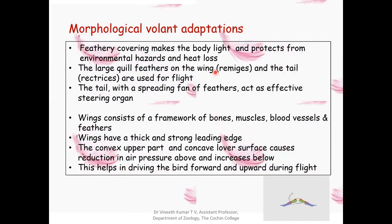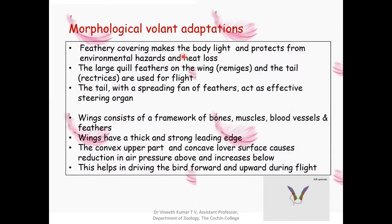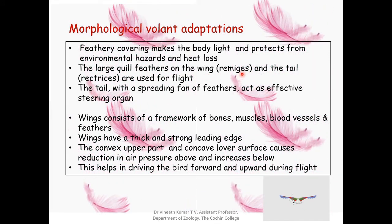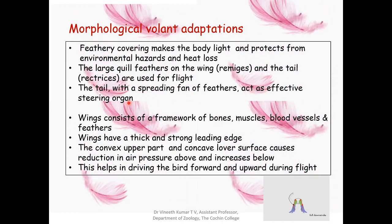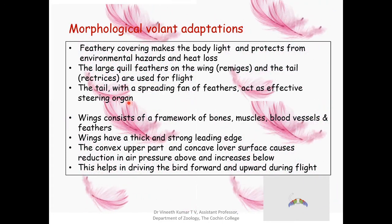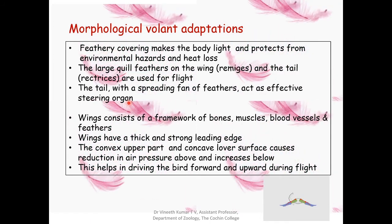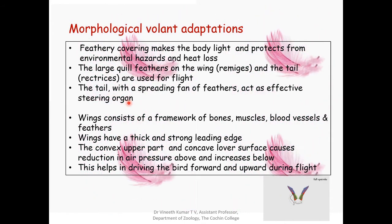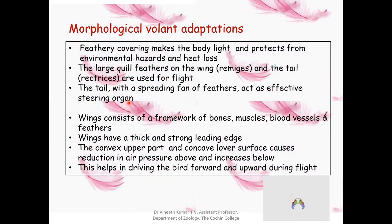The feathery covering makes the body light and protects from environmental hazards and heat loss — heat loss being prevented by the semi-plume and down feathers. The large quill feathers on the wings (ramages) and tail (rectrices) are used for flight. The tail, spreading like a fan, acts as an effective steering organ — like a rudder — shifting its position to change air pressure direction and thereby changing the direction of flight.